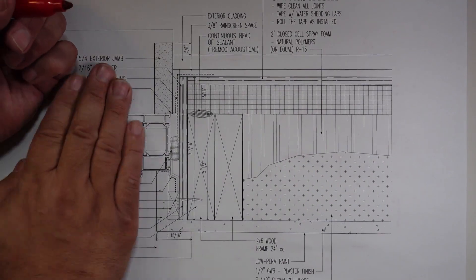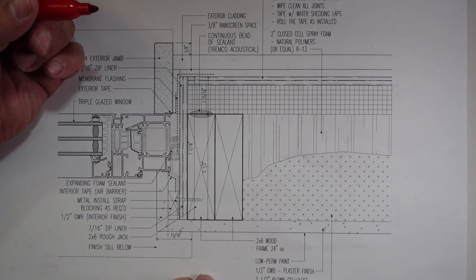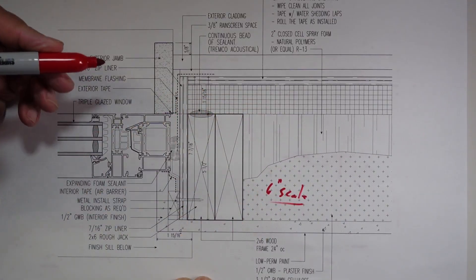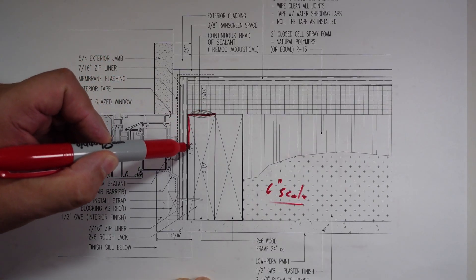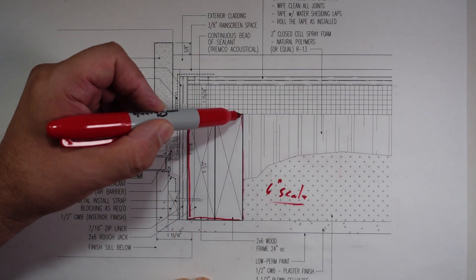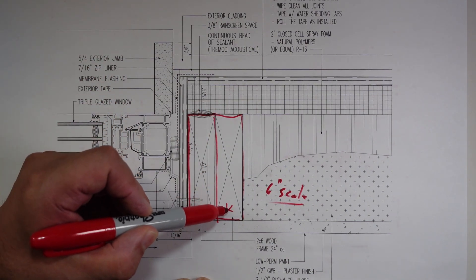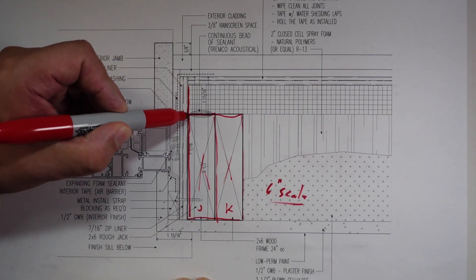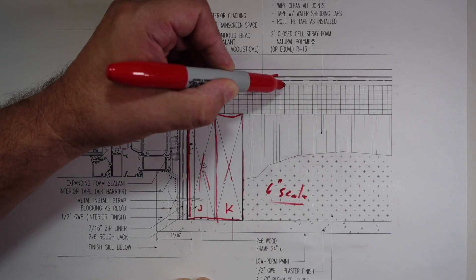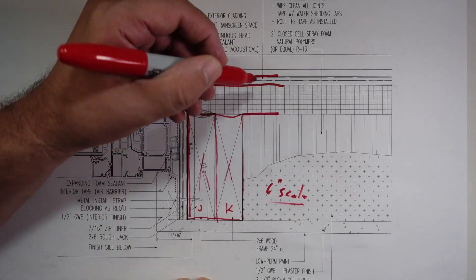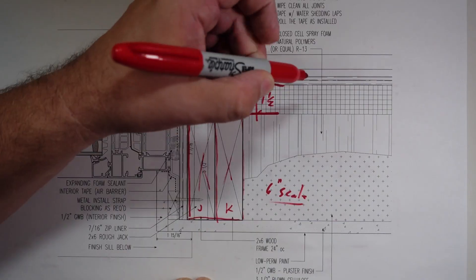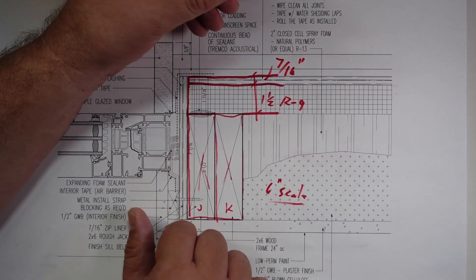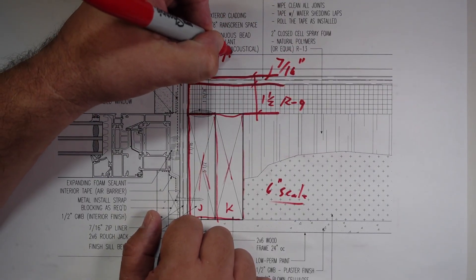I grabbed one of our jam details for the project. We typically draw these at six inch scale. To give you some orientation, there is the king stud and jack stud. You can also see here we have zip R9. Zip R9 is one and a half inches.